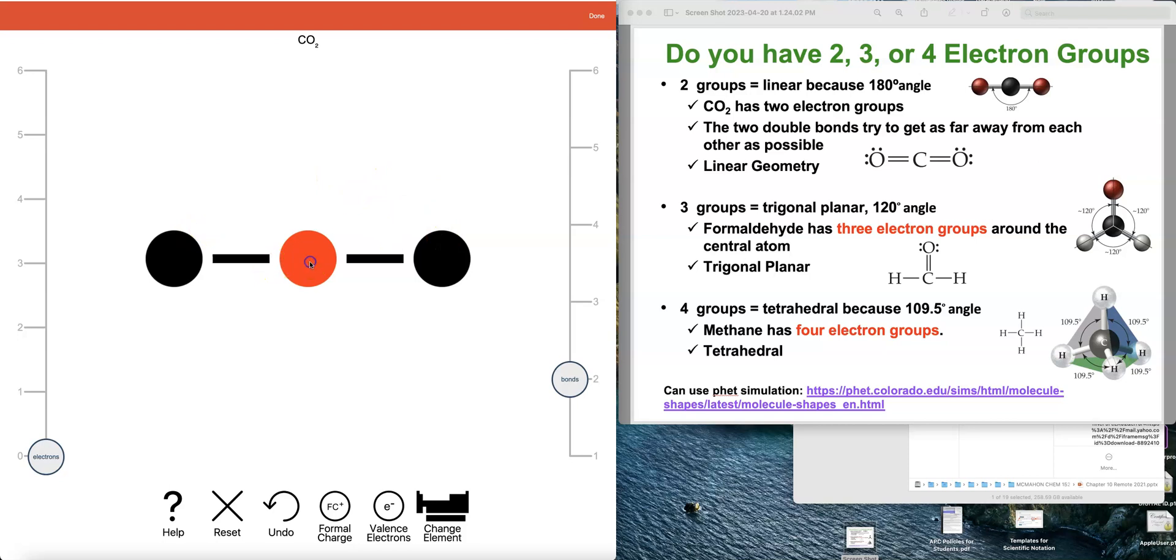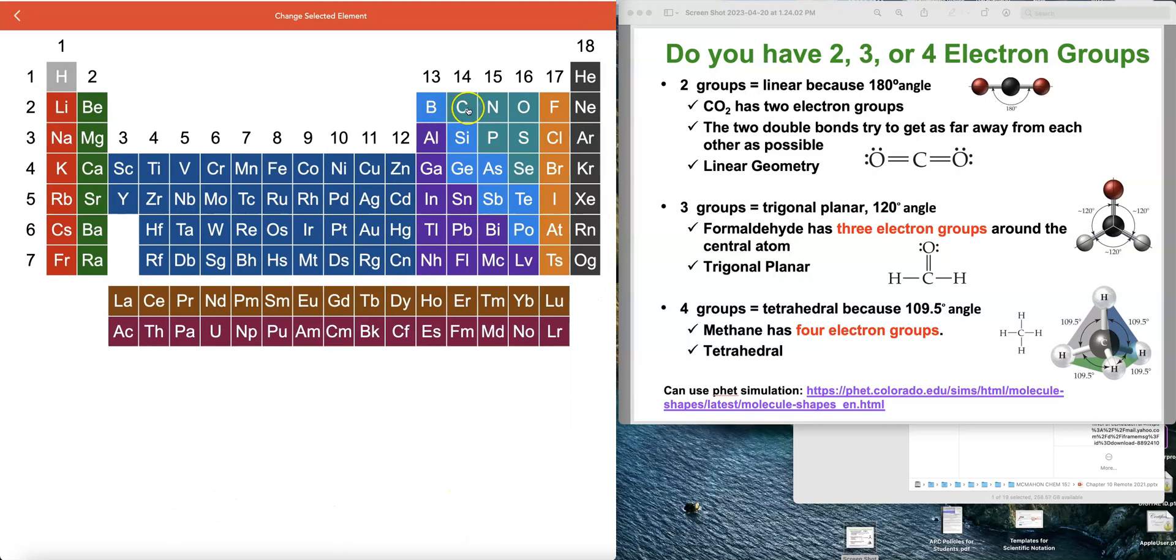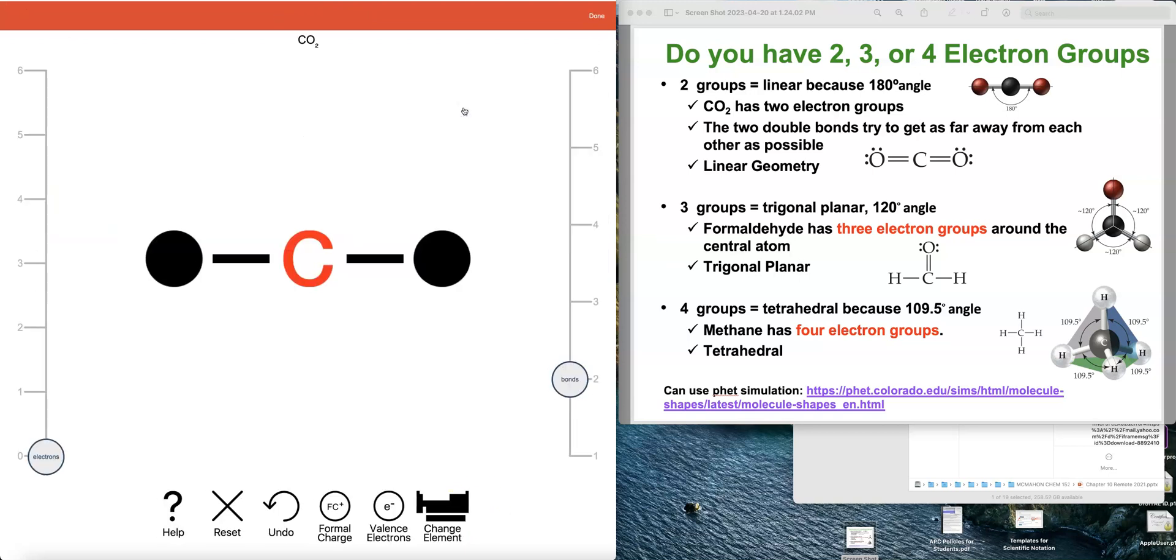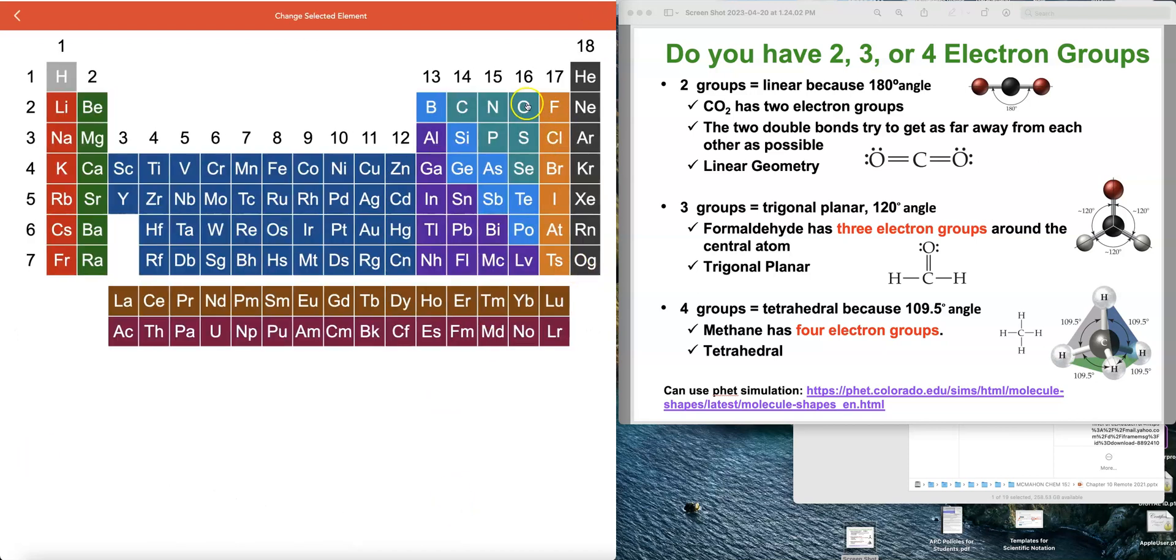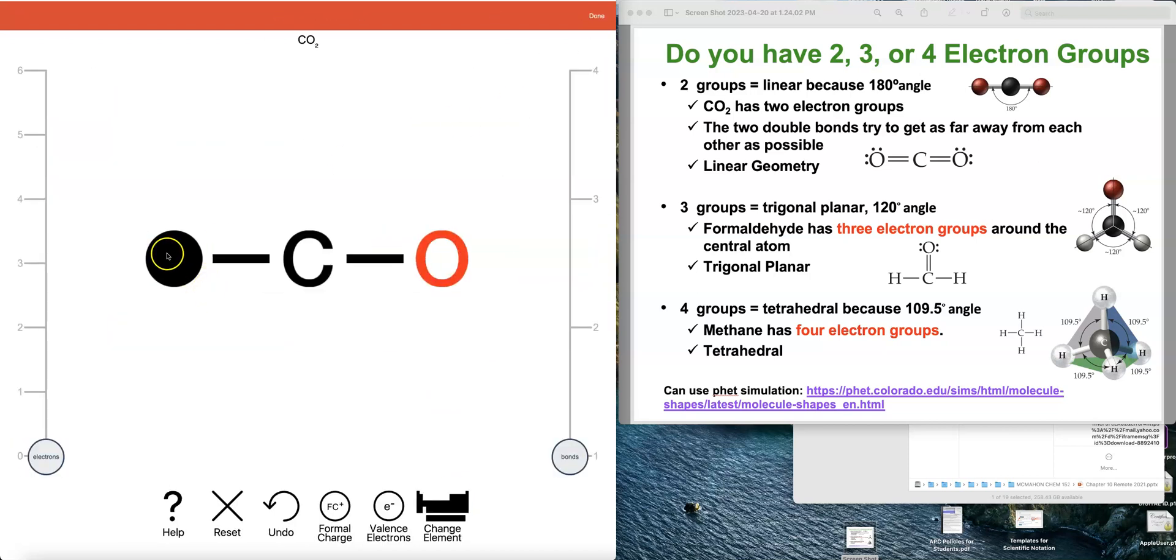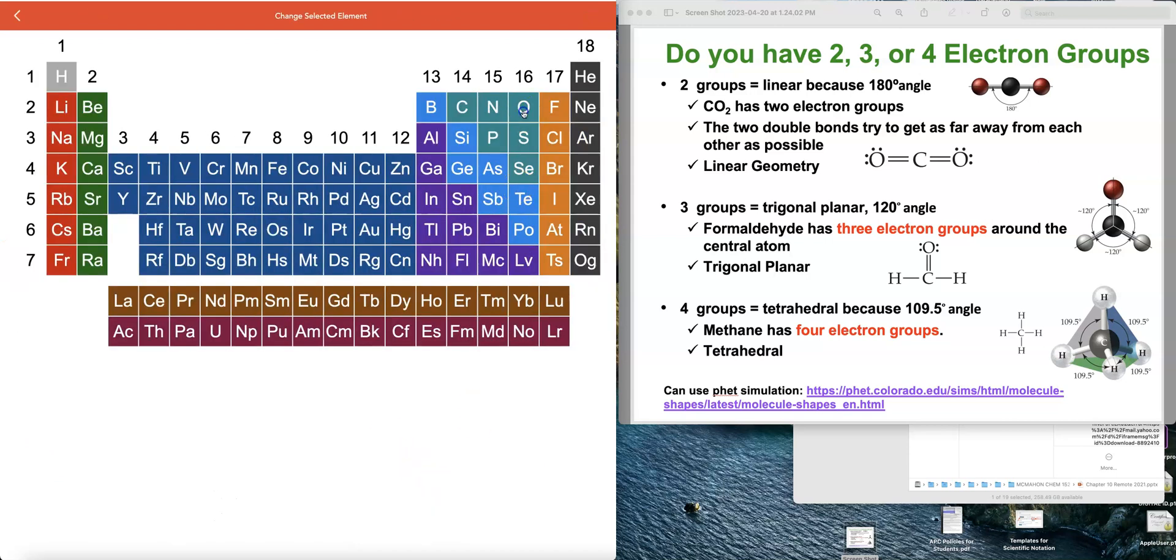The next thing is I can click onto the carbon and I can change that element using the periodic table and just click C to show the elemental symbol carbon. Now for the terminal atoms I can click where it says change element, go here, change that to an oxygen and do the same on this side, click there, change it to oxygen.